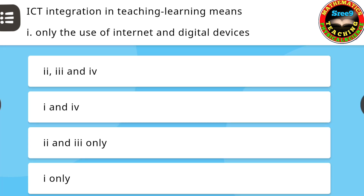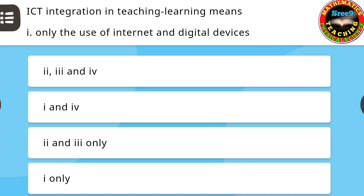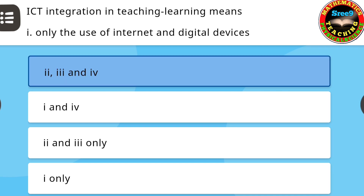The next question: ICT integration in teaching learning means — first, only the use of internet and digital devices; second, thoughtful use of technology; third, use of digital devices as a means to achieve the required objectives and learning outcomes; fourth, usage of technology seamlessly for educational processes. Choose the correct option. The correct answer is two, three, and four.